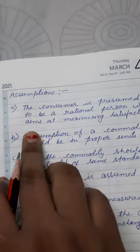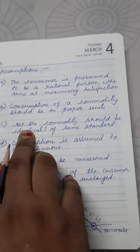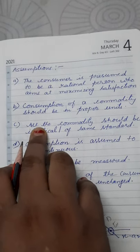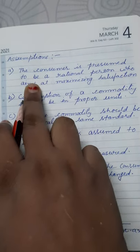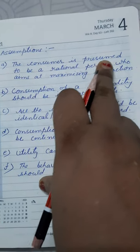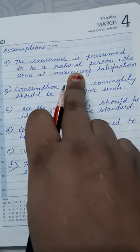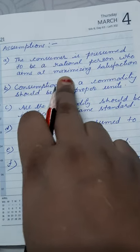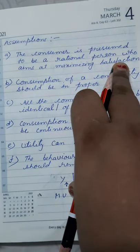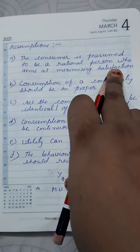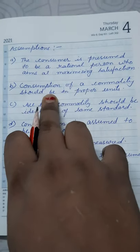Now, what are the assumptions? When we are going for a theory, definitely we should have certain assumptions. The first assumption, the consumer is presumed to be a rational person who aims at maximizing satisfaction. The consumer is rational and he wants to maximize his satisfaction.